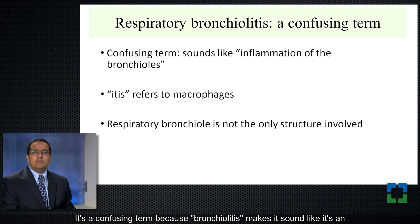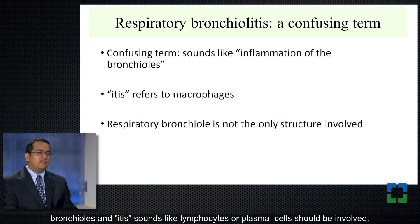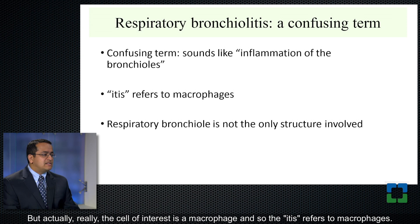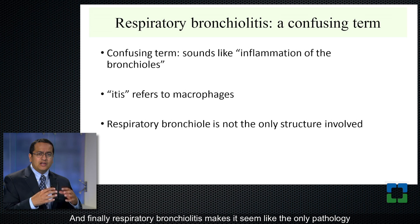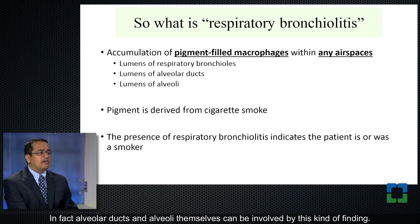The term respiratory bronchiolitis is actually pretty confusing. Bronchiolitis makes it sound like it's an inflammation of the bronchioles, whereas it actually does not necessarily need to involve bronchioles. And '-itis' sounds like lymphocytes or plasma cells should be involved, but actually the cell of interest is a macrophage. Finally, the term makes it seem like the only pathology should be within the respiratory bronchiole, but alveolar ducts and alveoli themselves can also be involved.